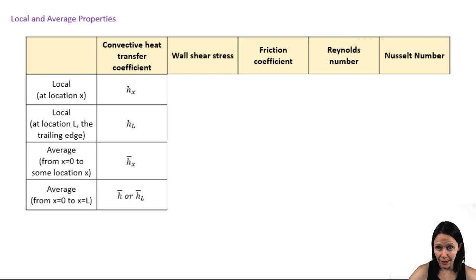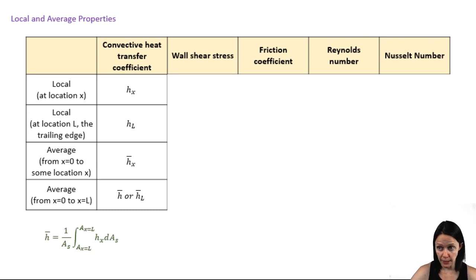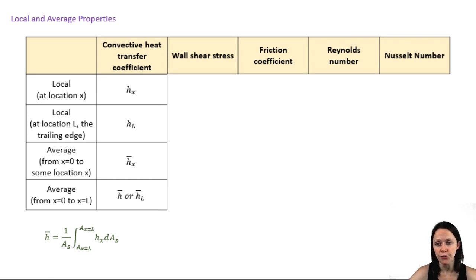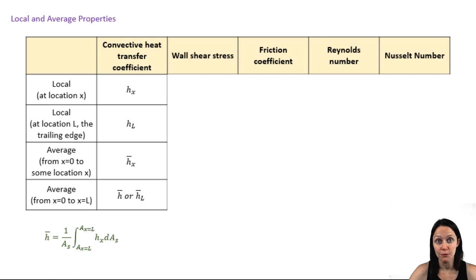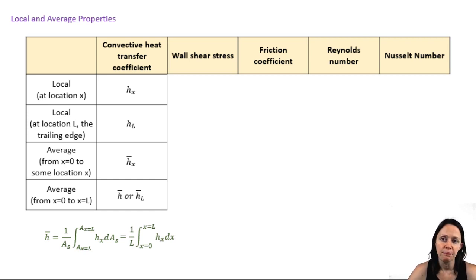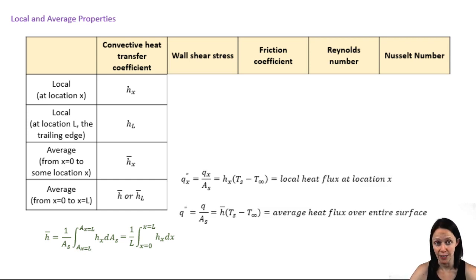If we want to express the average heat transfer coefficient, we can integrate the expression for H over the plate from x equals zero to whatever location we need, which in this case is the trailing edge at x equals L. Do keep in mind that the local heat transfer coefficient is dependent on whether the flow is turbulent or laminar, so you may have to consider the local heat transfer coefficients for both cases if the flow has regions of both laminar and turbulent flow. In the special case of a flat plate, this expression can be put in terms of L. This means that you can define the heat flux at a particular location, or you can define the average heat flux over the entire plate.